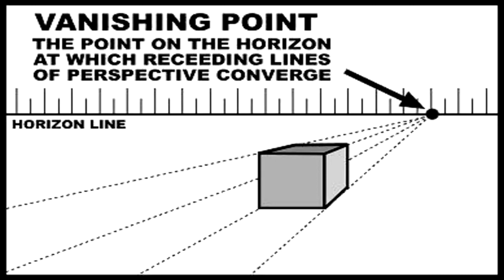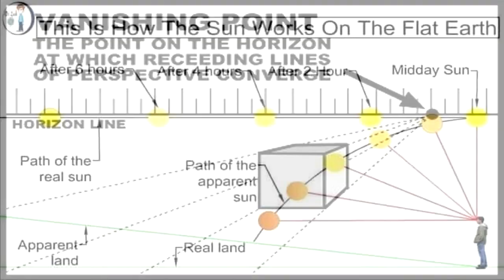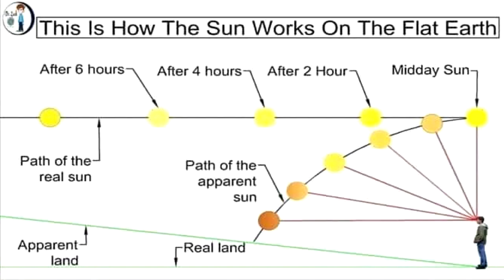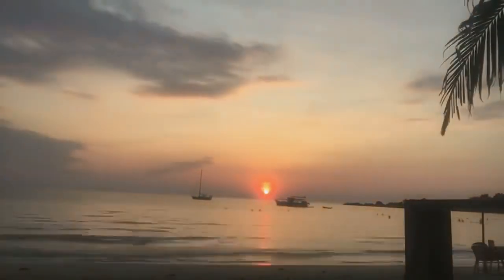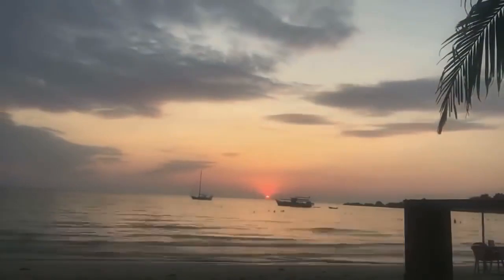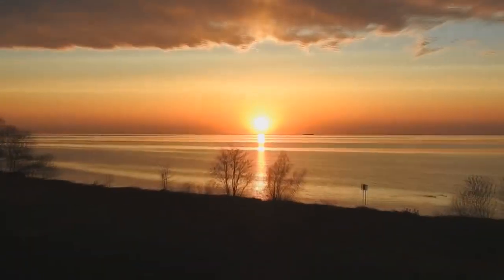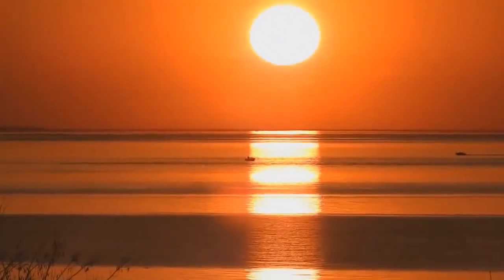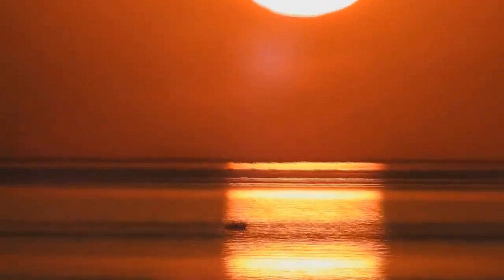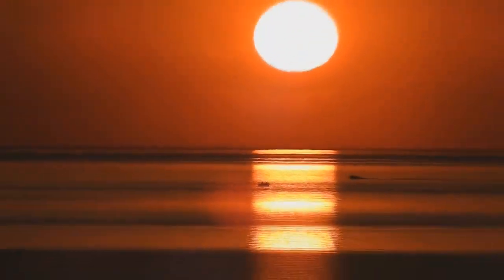Globe defenders will often insist this explanation is incorrect, and challenge flat earthers that if the sun has simply disappeared due to perspective, then a good zoom camera should be able to bring it back into full view after it has set, just like with ships disappearing beyond the horizon. In reality, zooming a ship back into view from a few miles away is much different than bringing the sun back from over 3,000 miles away. Furthermore, ships are usually traveling only a few miles per hour, while the sun travels over 1,000 miles per hour, so the window of opportunity to attempt this experiment is only a few minutes.